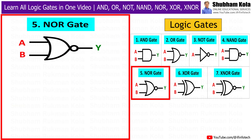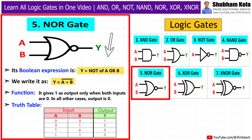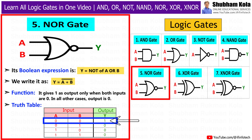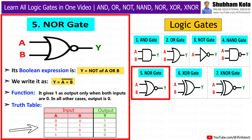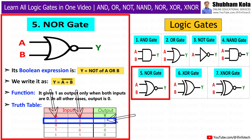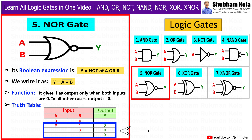The fifth gate is the NOR gate. It is a combination of the OR gate and NOT gate. Its Boolean expression is y = NOT (A OR B), written as y = A + B bar. It gives 1 as output only when both inputs are 0; in all other cases, output is 0. It looks like an OR gate with a small circle at the output. In the truth table, if A and B are both 0, the output is 1; for all other inputs, the output is 0.